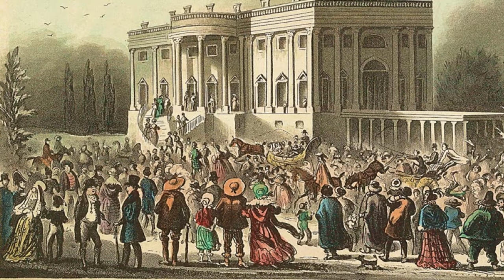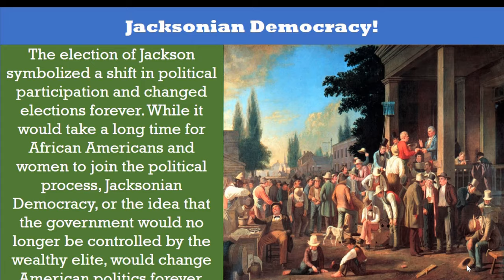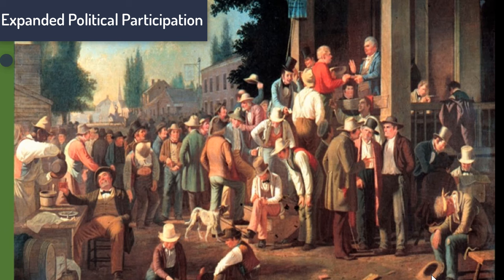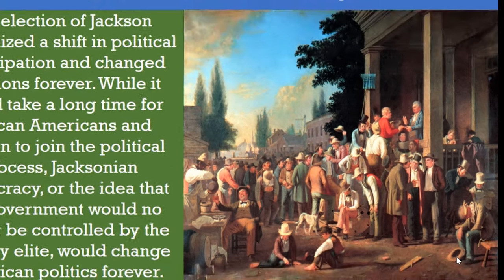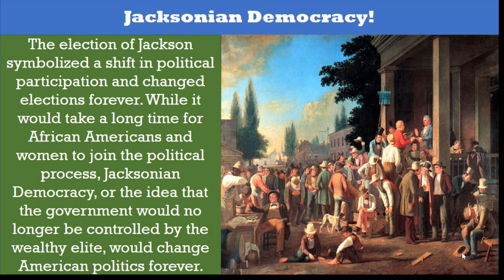Thousands poured into Washington to attend Jackson's inauguration, as well as a party hosted at the White House afterward. The party apparently got out of hand as an intoxicated crowd trashed the White House. The election of Jackson symbolized a shift in political participation and changed elections forever. While it would take a long time for African Americans and women to join the political process, Jacksonian democracy — the idea that the government would no longer be controlled by the wealthy elite — would change American politics forever.